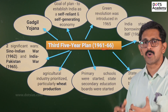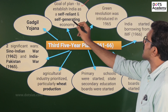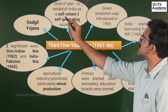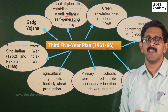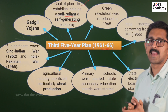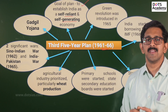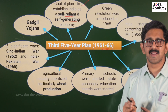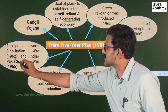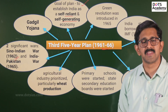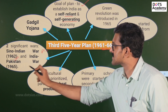The objective of the third five-year plan was to develop India into a self-reliant and self-generating economy. During 1961 to 1966, India faced two wars: the India-China war and the India-Pakistan war in 1965.